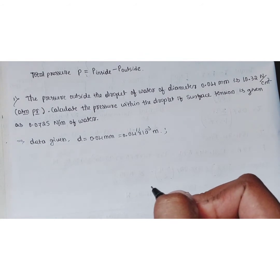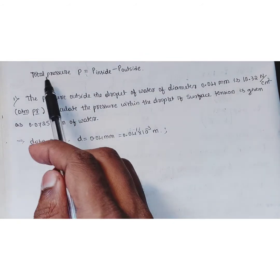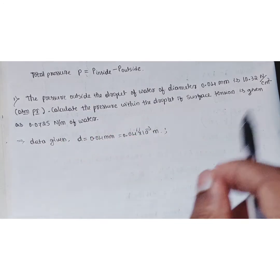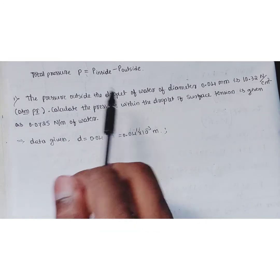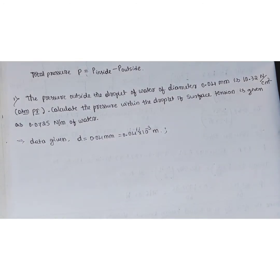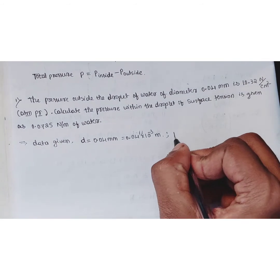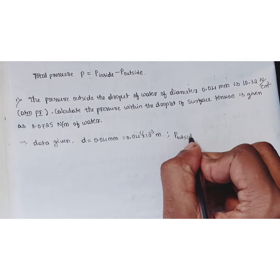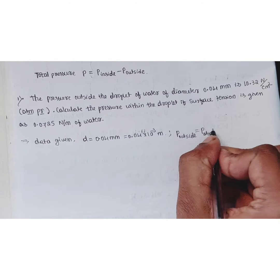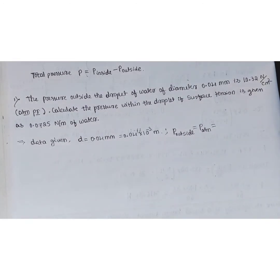We use the relation: total pressure p = p_inside − p_outside. The inside pressure will differ from the outside. Since the outside surface is exposed to the atmosphere, p_outside equals the atmospheric pressure. Therefore, p_outside = p_atmospheric = 10.32 Newton per centimeter square.